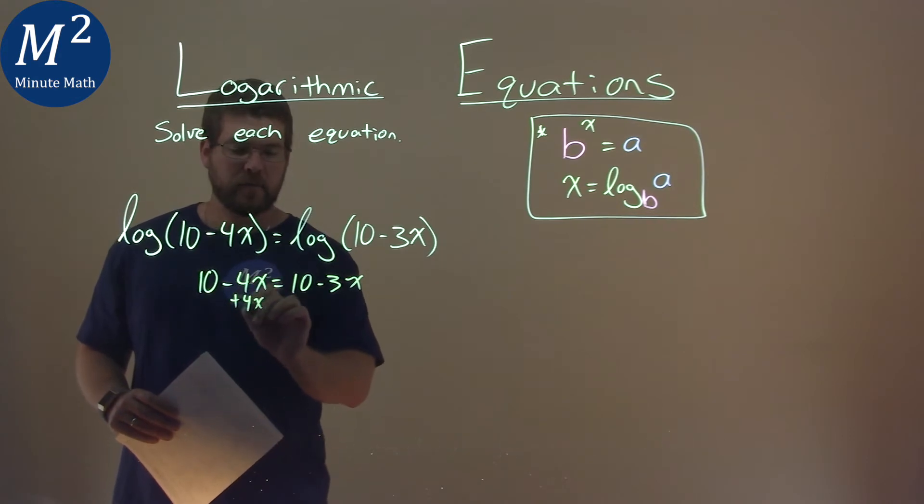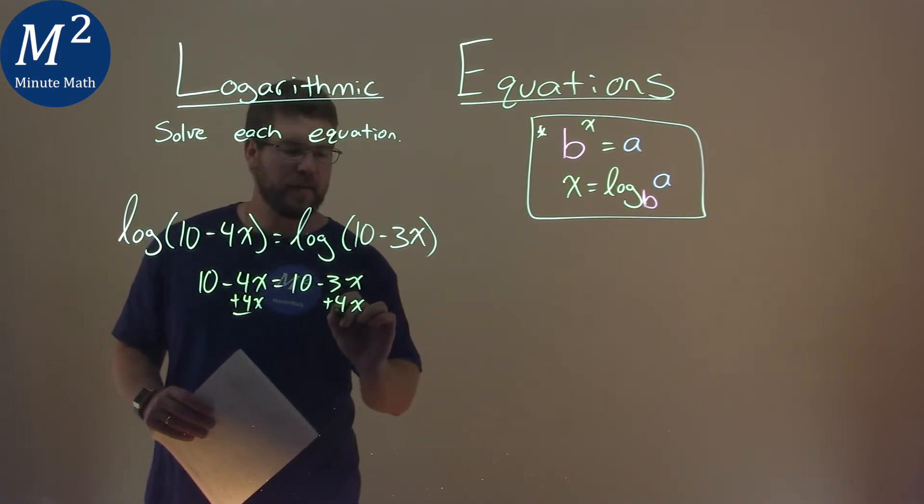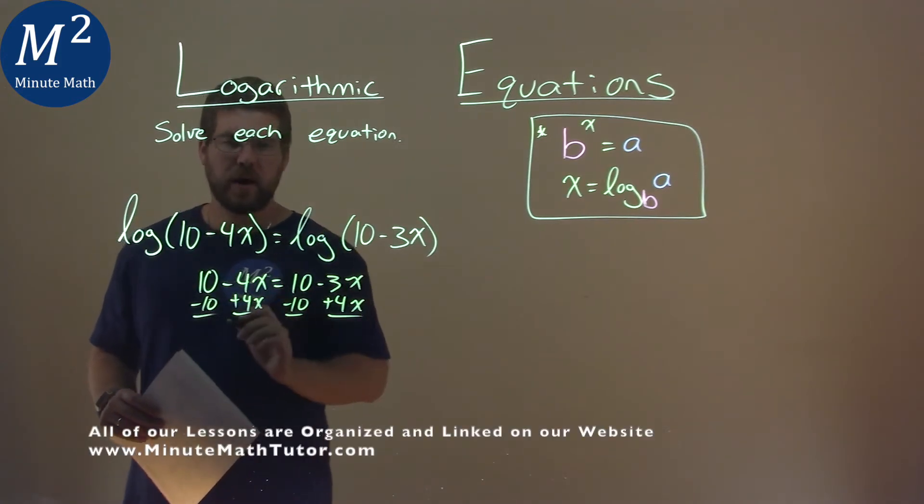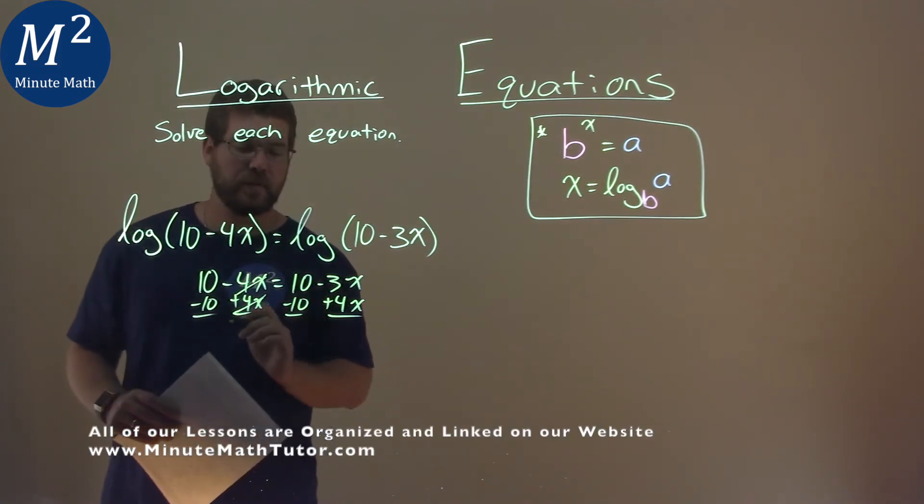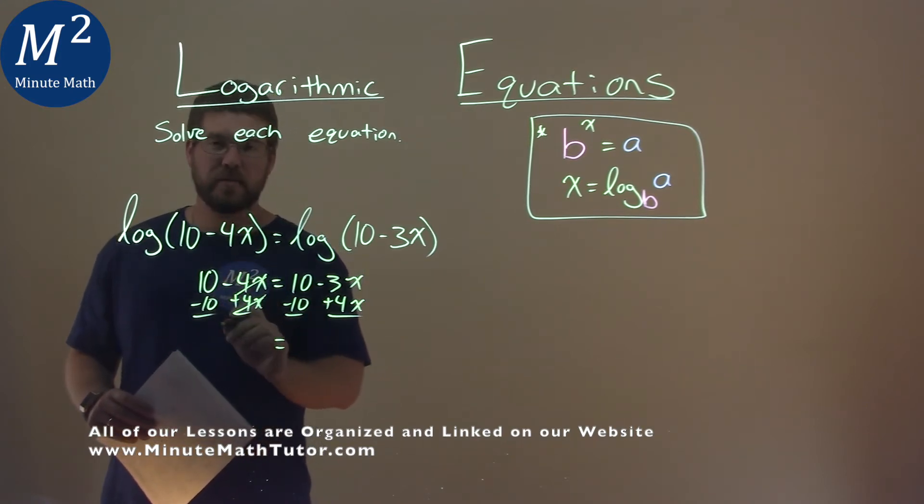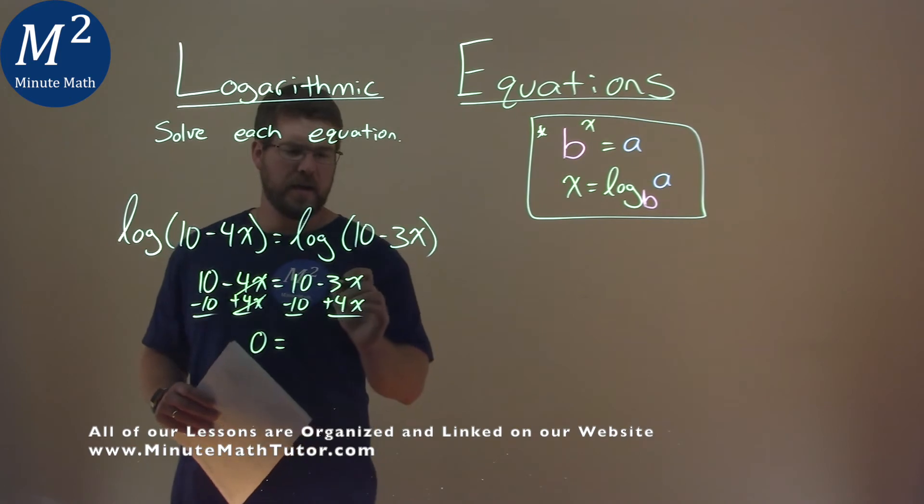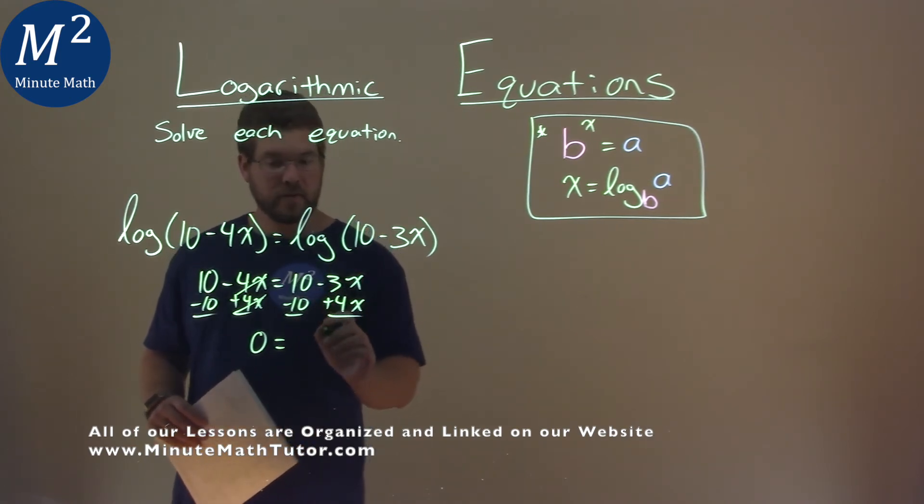I add a 4x to both sides, not too bad, and I'll subtract the 10 to both sides. Minus 4x plus 4x cancel each other out at zero, and 10 minus 10 is also zero. This 10 minus 10 is zero, and negative 3x plus 4x is just a 1x.